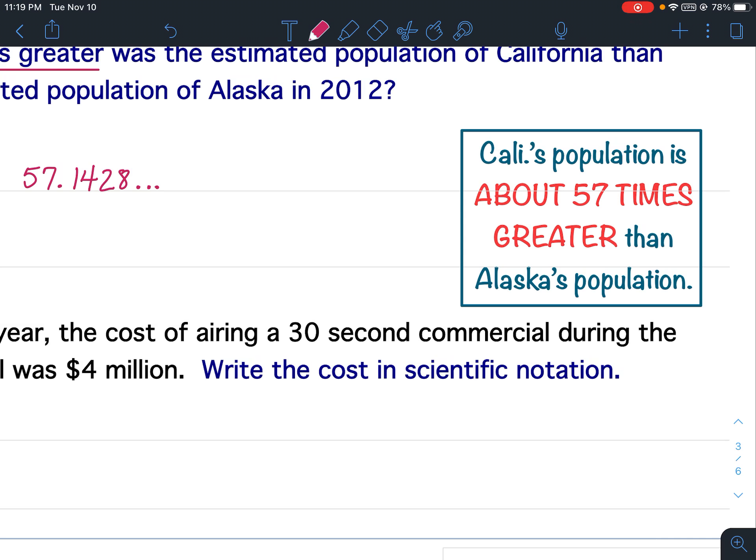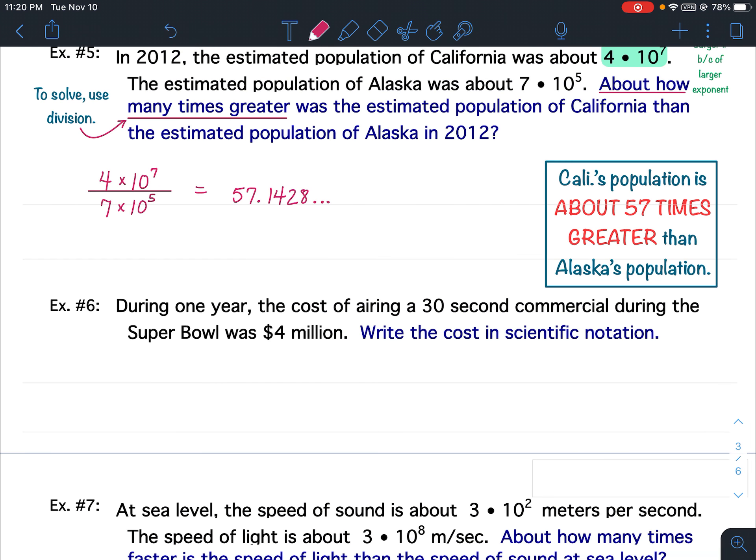So, the key part of this answer is, first of all, the word about, about 57 times greater. If all you wrote down was about 57 times greater, I would take it. If you forget the word about, if you forget times greater, then I'd be taking points off. You have to make sure you have about 57 times greater.